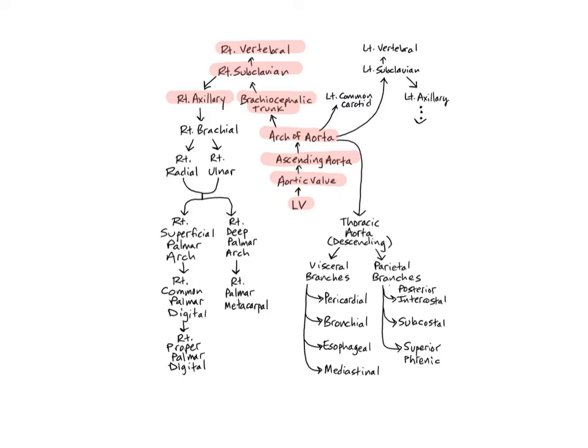The right axillary artery begins near the inferior border of the first rib and ends as it crosses below the teres major muscle. It branches into various smaller arteries in the axilla that supply muscles of the shoulder, scapula, thoracic wall, and humerus.